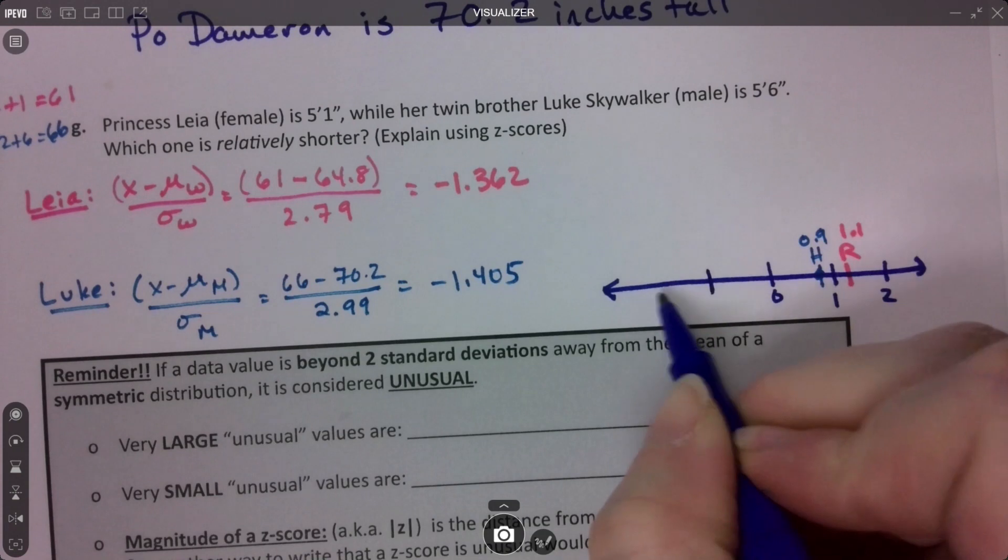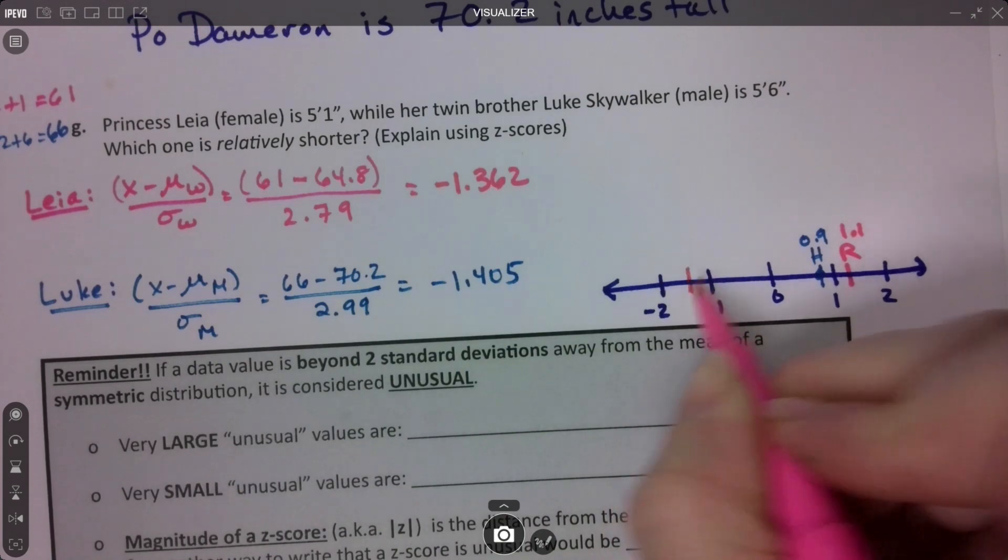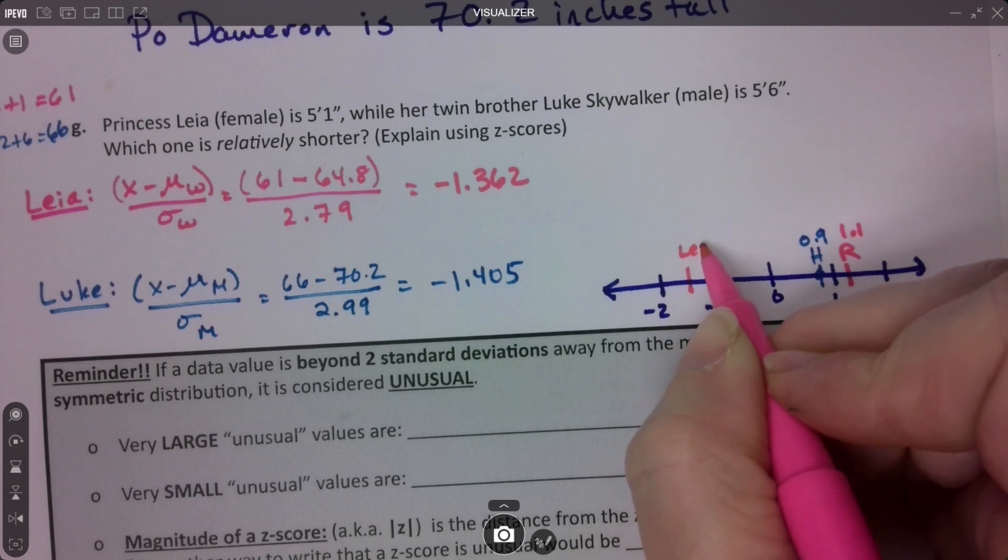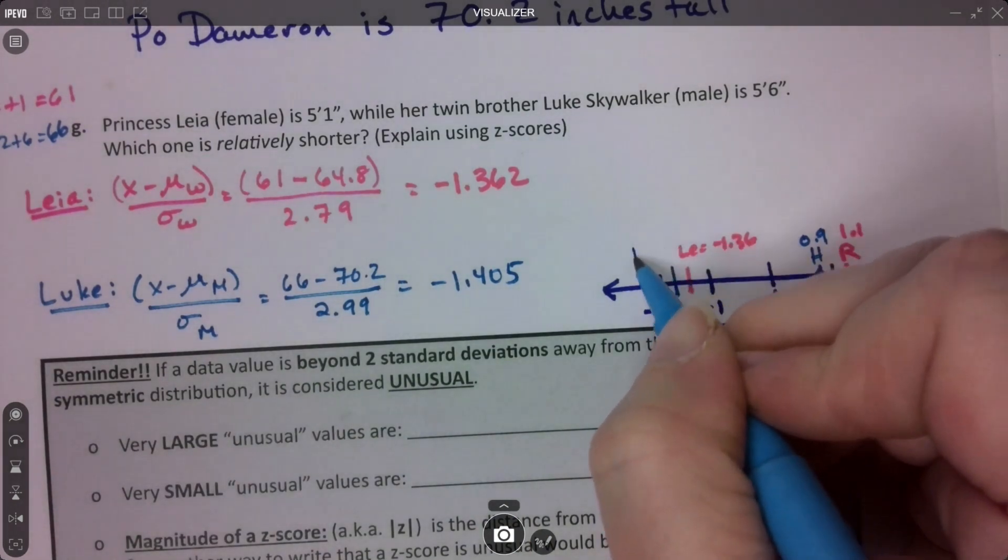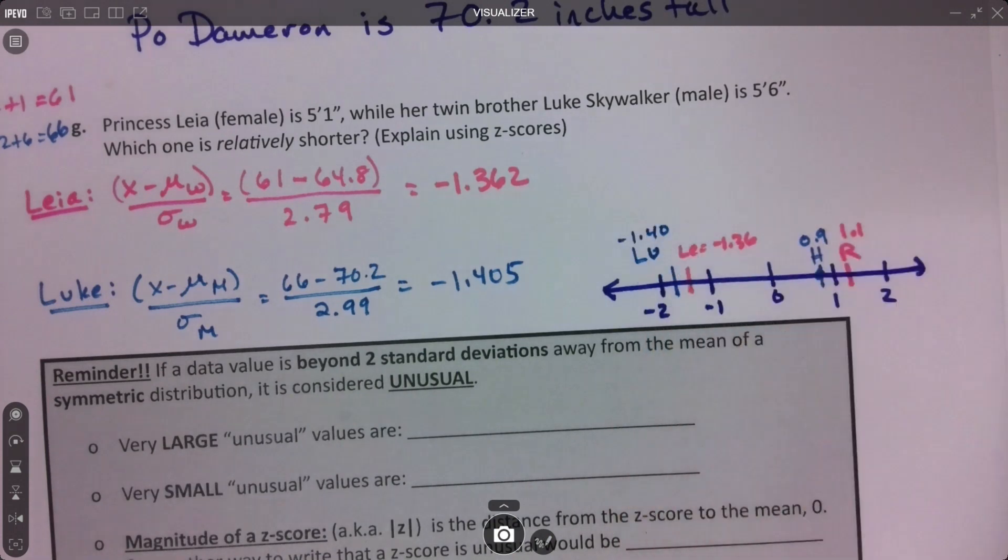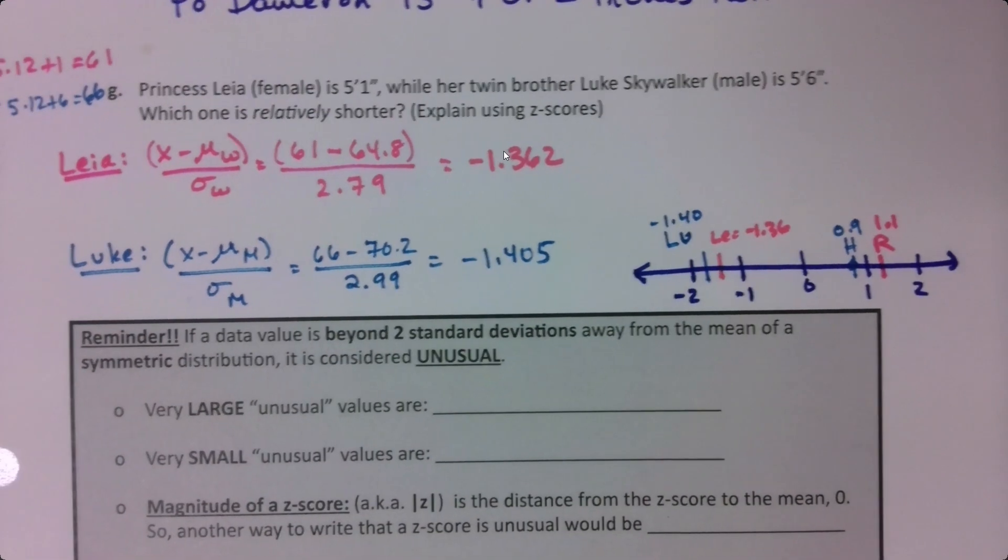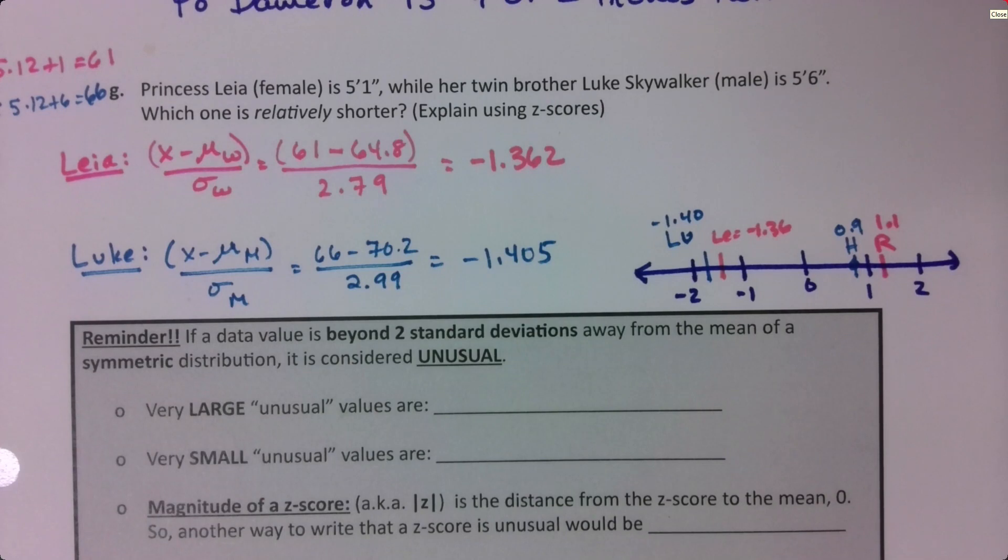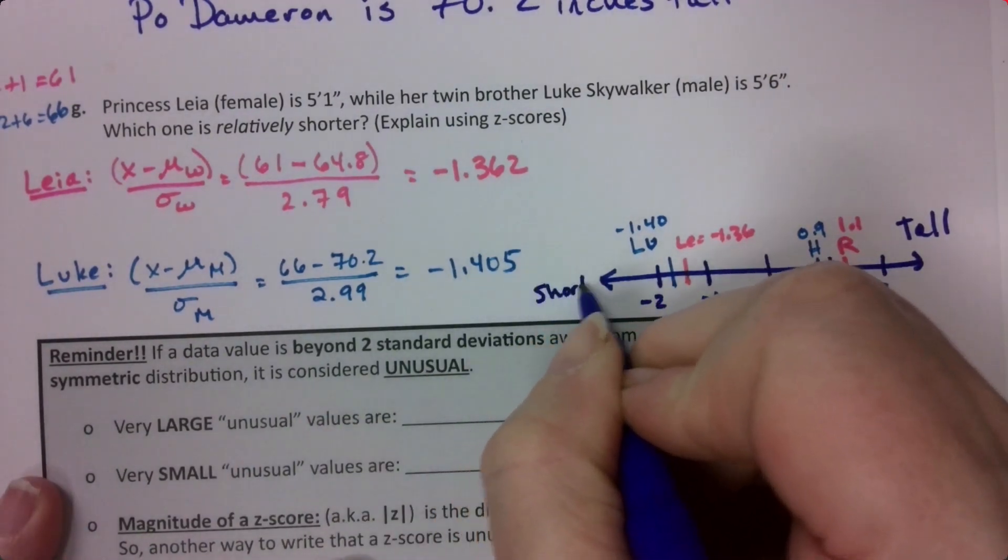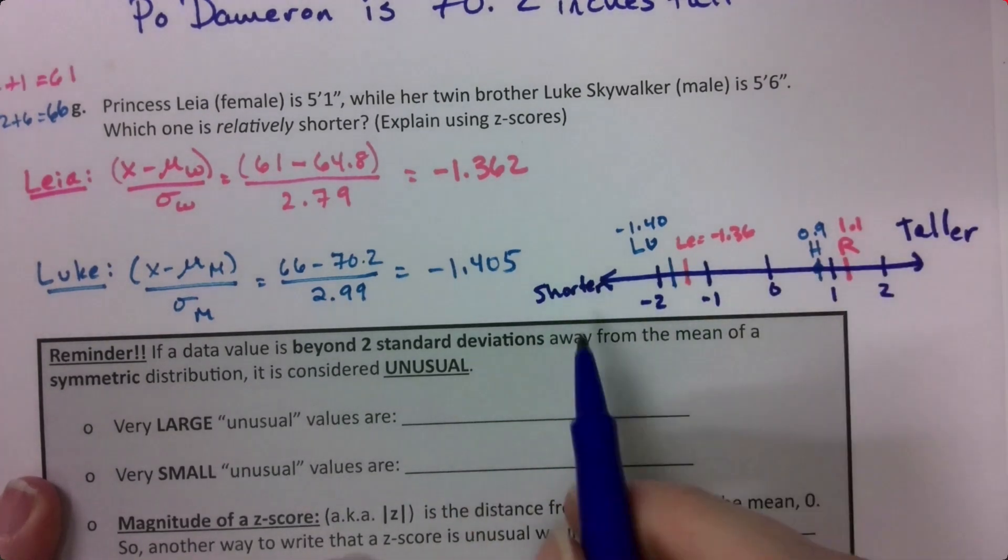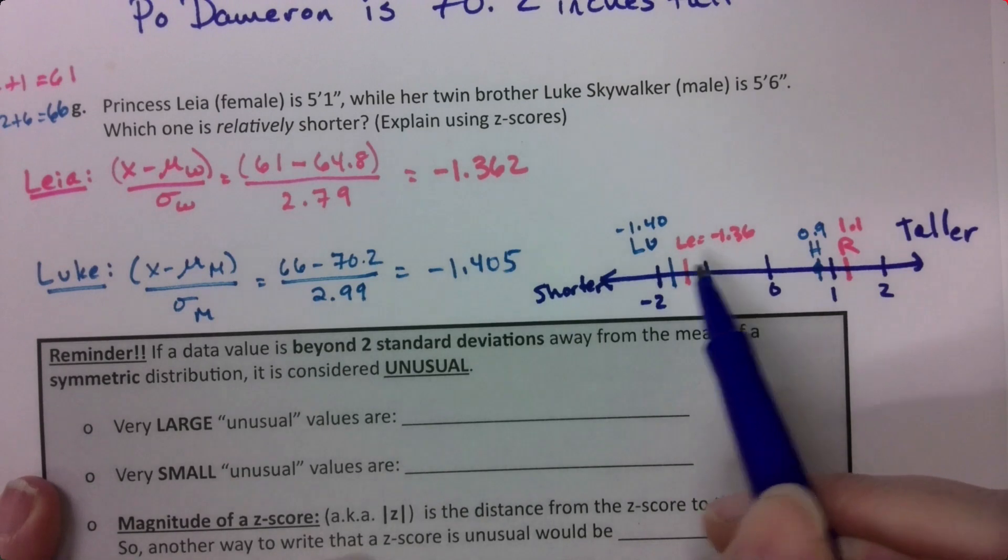Now let's consider Luke and Leia at negative values. Leia is at negative 1.36, so she's right here. Luke is at negative 1.40, so he's over here. Who's relatively taller and who's relatively shorter is a matter of thinking about who's on the right and who's on the left. Taller values, larger values, will be over here. Shorter values will be over here. Leia is taller than Luke. She's farther to the right, less negative than him.